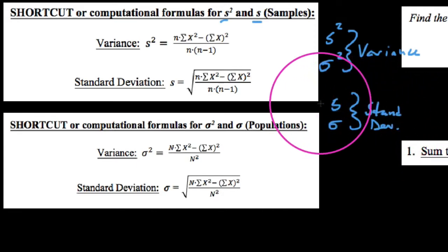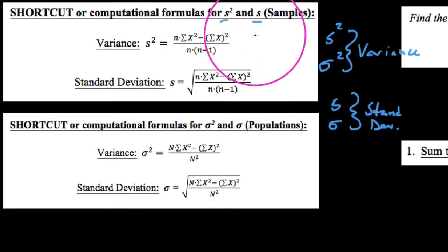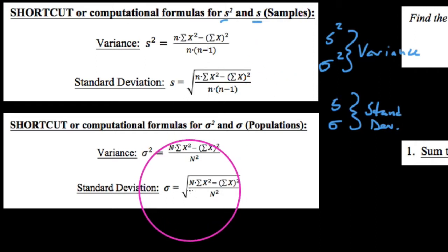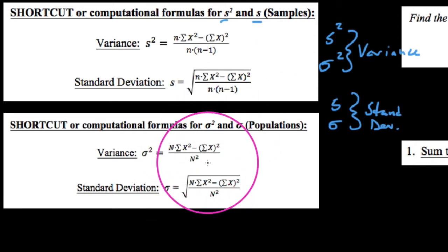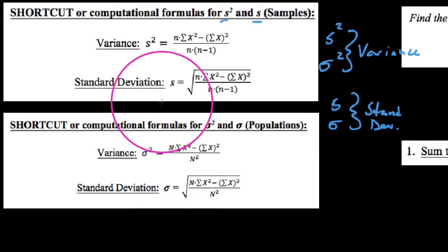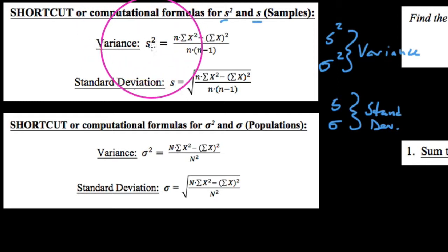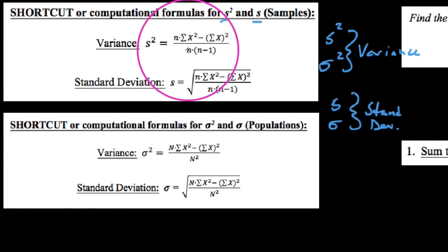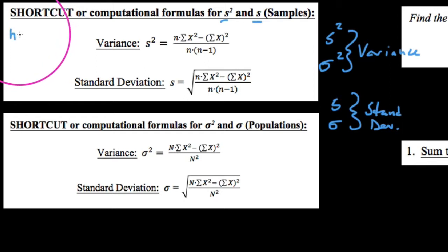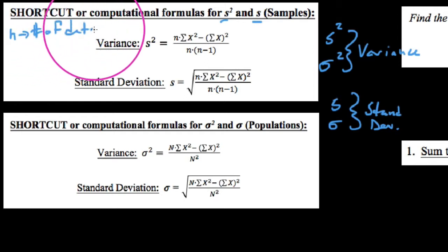The difference between these two: when you talk about a sample, we use Roman letters to indicate this, and when we talk about populations, we typically use Greek letters. In terms of other differences between the formulas, let's look at the shortcut formulas. For a sample, S squared is given with lowercase n — we're going to need to know n, which is the number of data you are finding the standard deviation for.